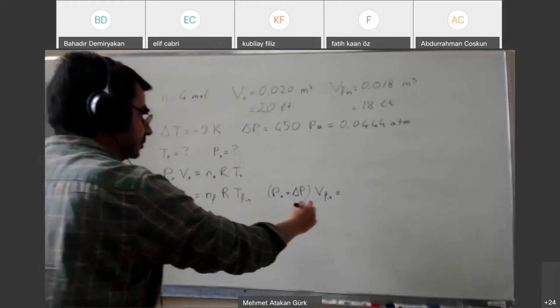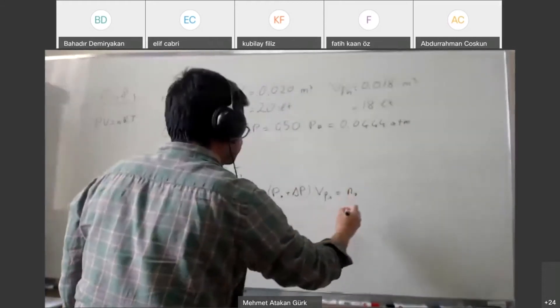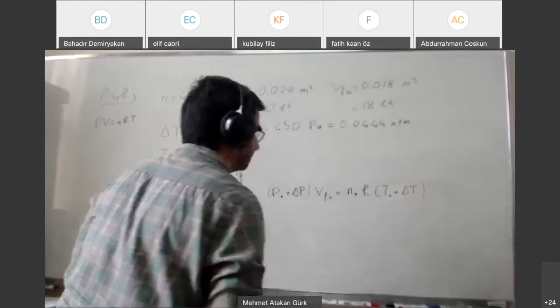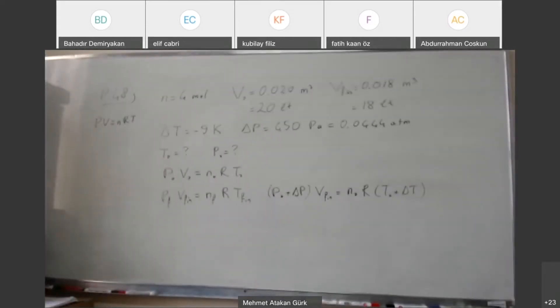Times V final. V final is given so I don't need to write it as V0 plus delta V. And n final is the same thing as n0 times R. And this will be T0 plus delta T. Obviously I have this so I have two equations for two unknowns.